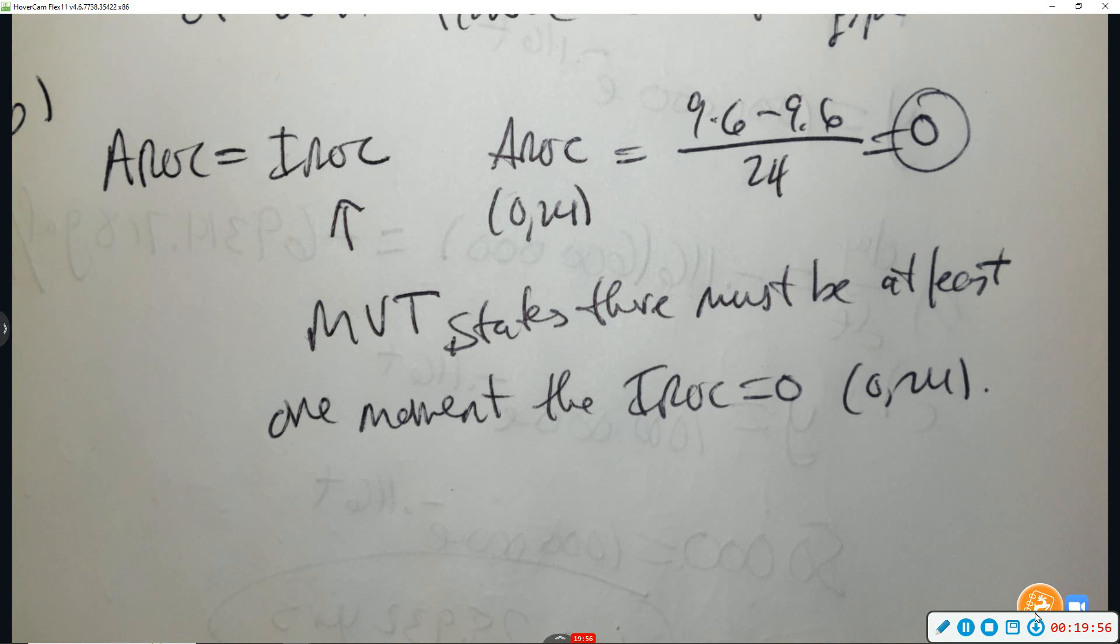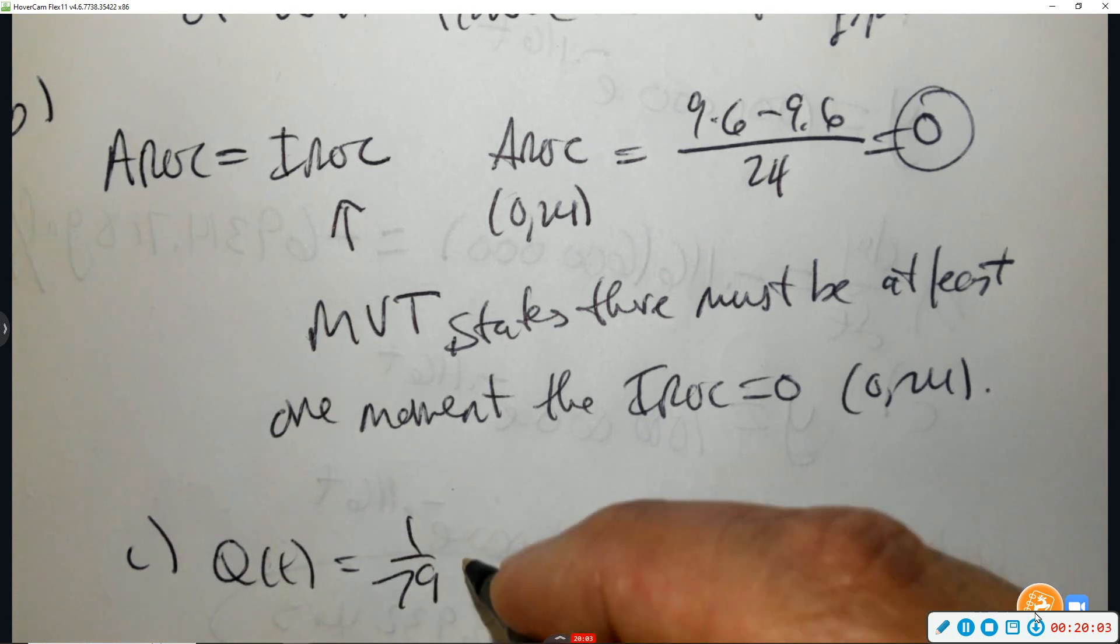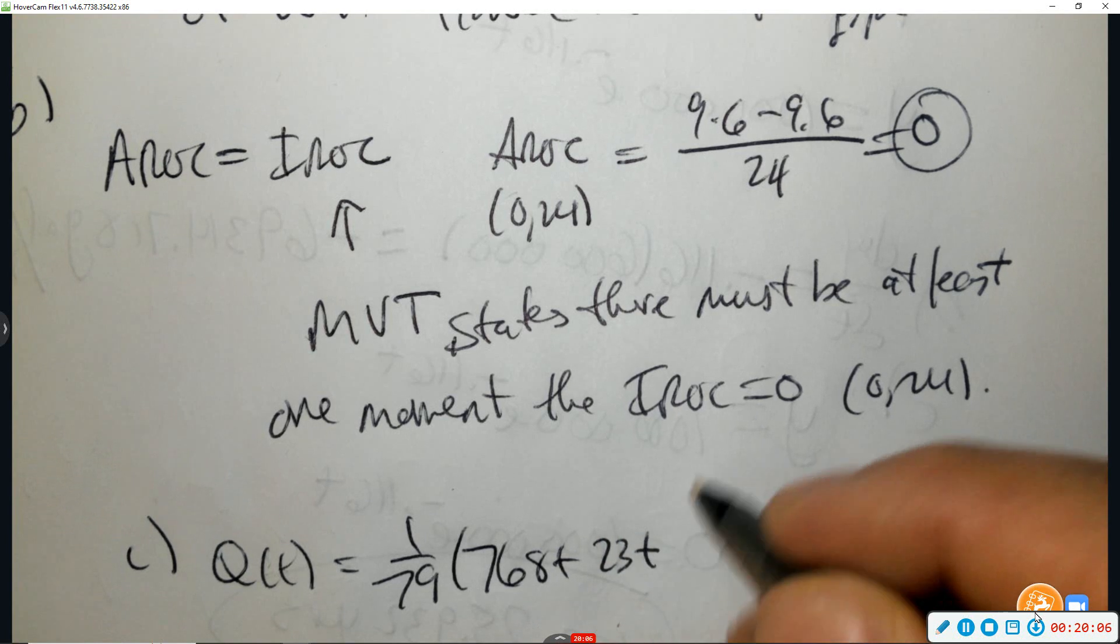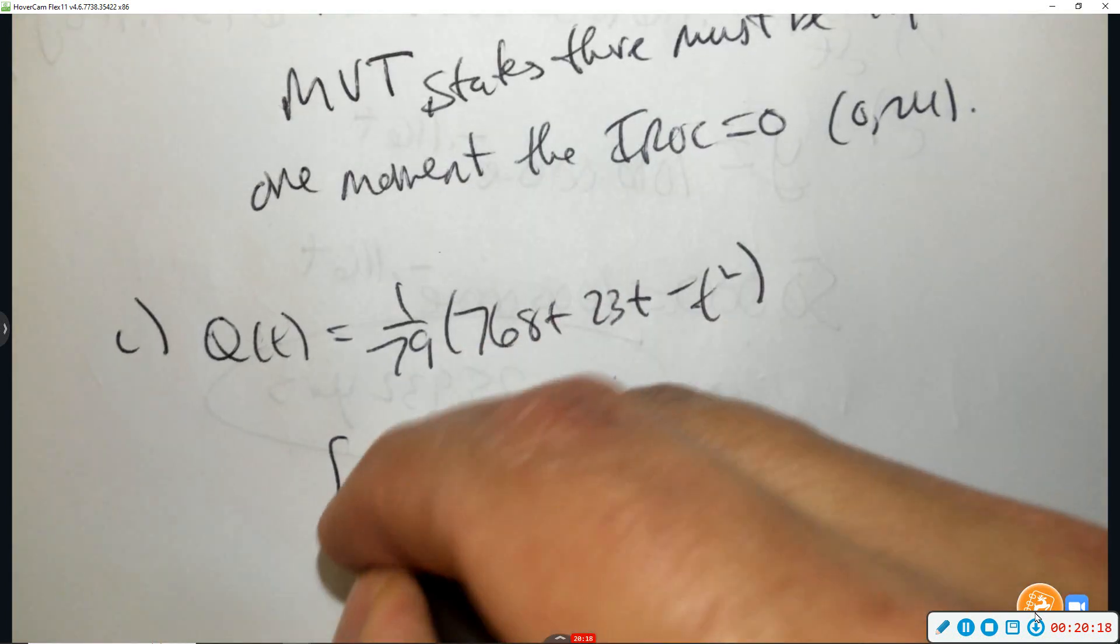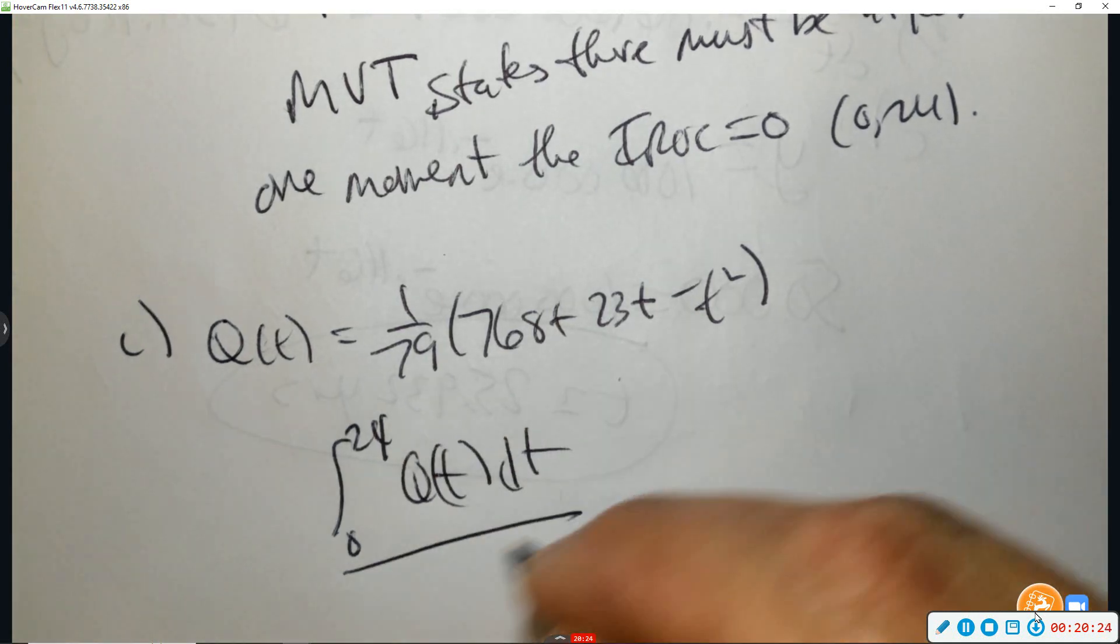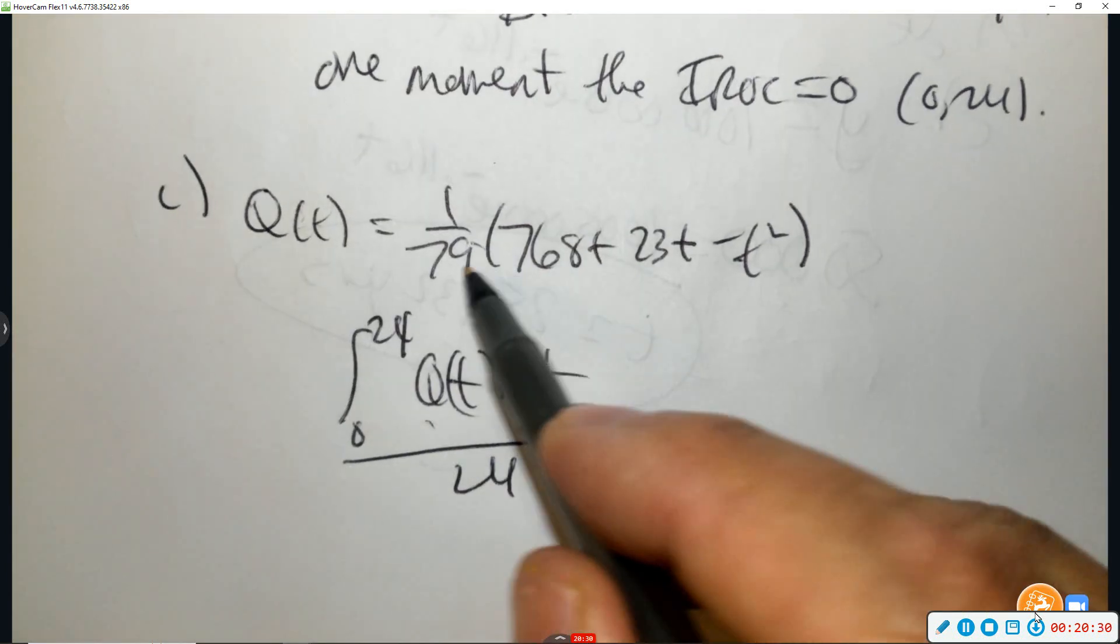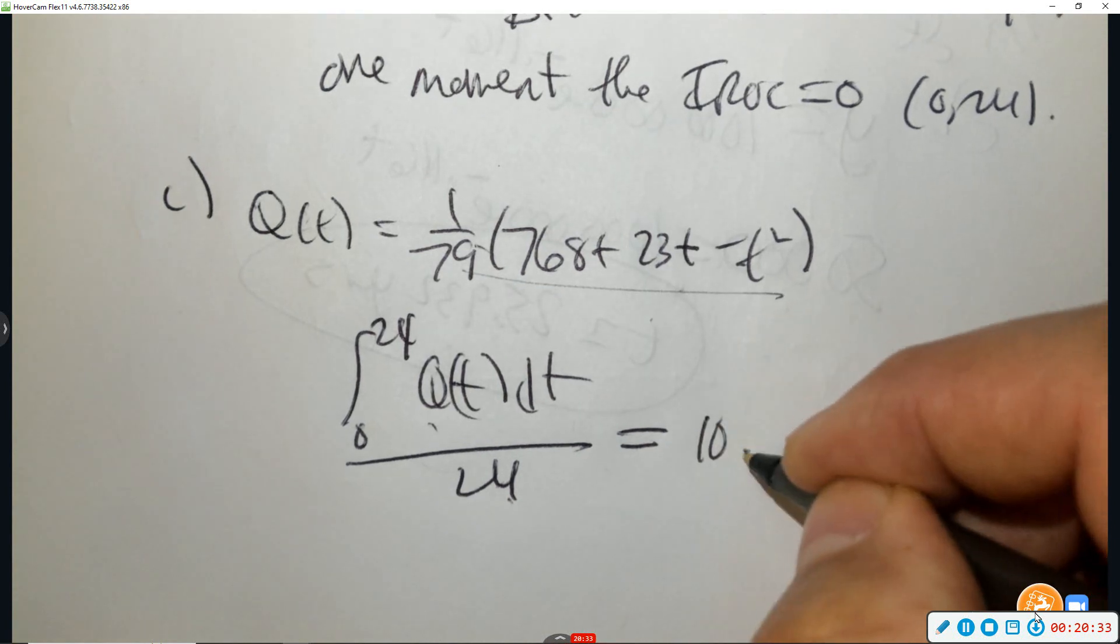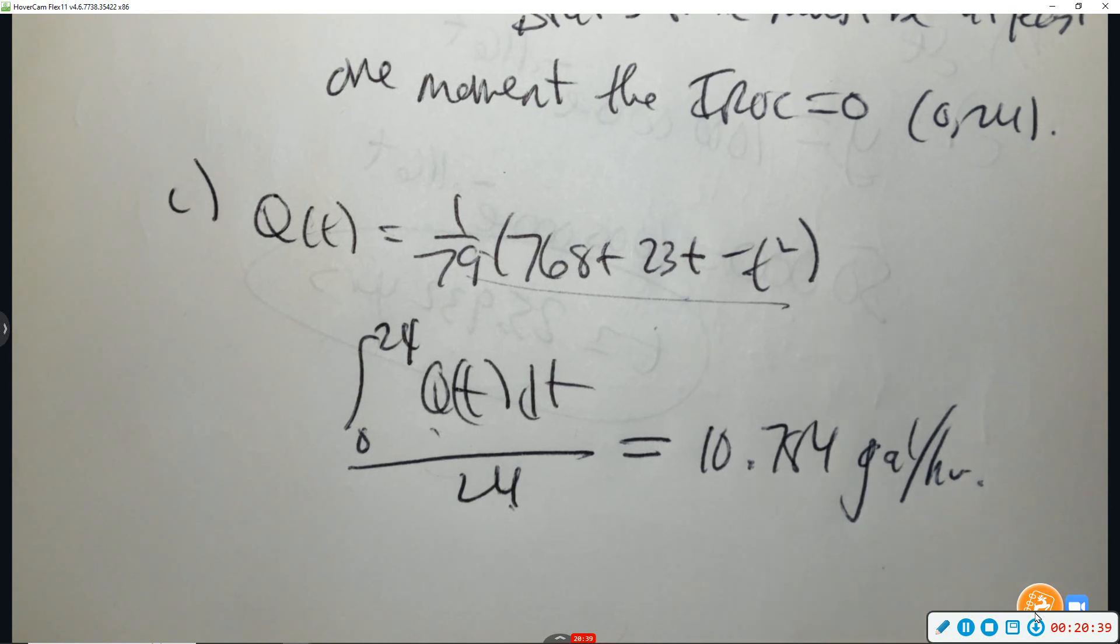All right, part C. The rate of water flow can be approximated by going 1 over 79,768 plus 23t minus t squared. Use Q of t to approximate the average water flow during the 24-hour period. So average would mean like average values from 0 to 24. That whole thing that was just given, and divide by 24. Use your calculator to type this in. And you would get 10.784 on average gallons per hour. Or you can round up to 5. All right, last one.